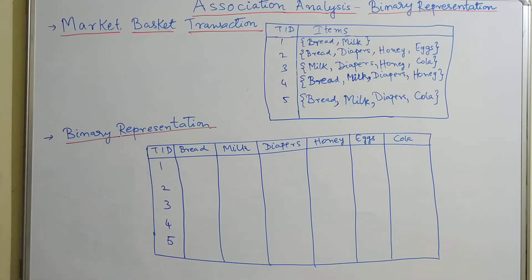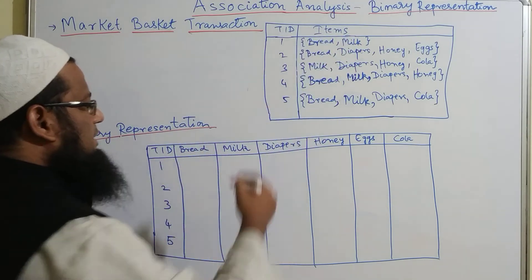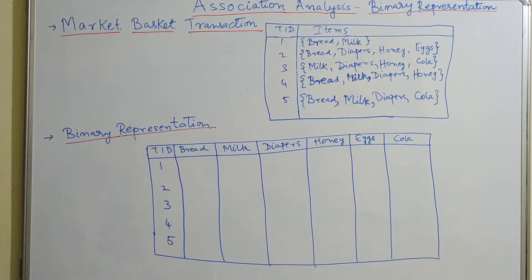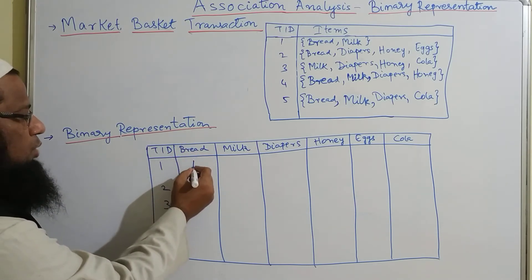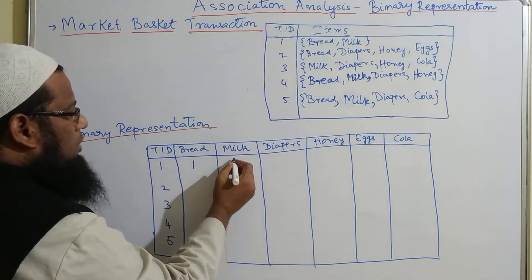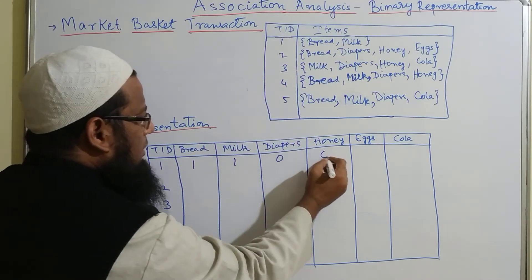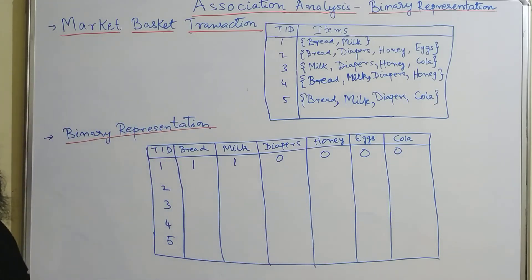For example, if you see the first transaction ID, bread and milk are present. So what we are going to do is in the column where you have bread, you make it 1, and milk you make it 1. The rest of them will be 0.